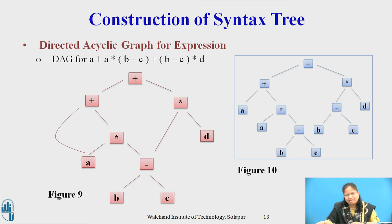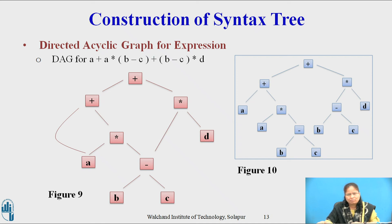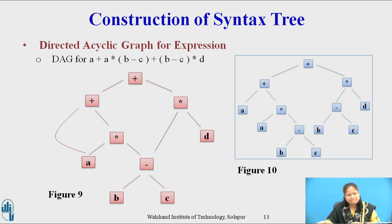A DAG is obtained if the function constructing a node first checks to see whether an identical node already exists. For example, before constructing a new node with label op and fields with pointers to left and right, makenode(op, left, right) can check whether such a node has already been constructed. If so, makenode(op, left, right) can return a pointer to the previously constructed node. The leaf-constructing function makeleaf can behave in the same fashion.